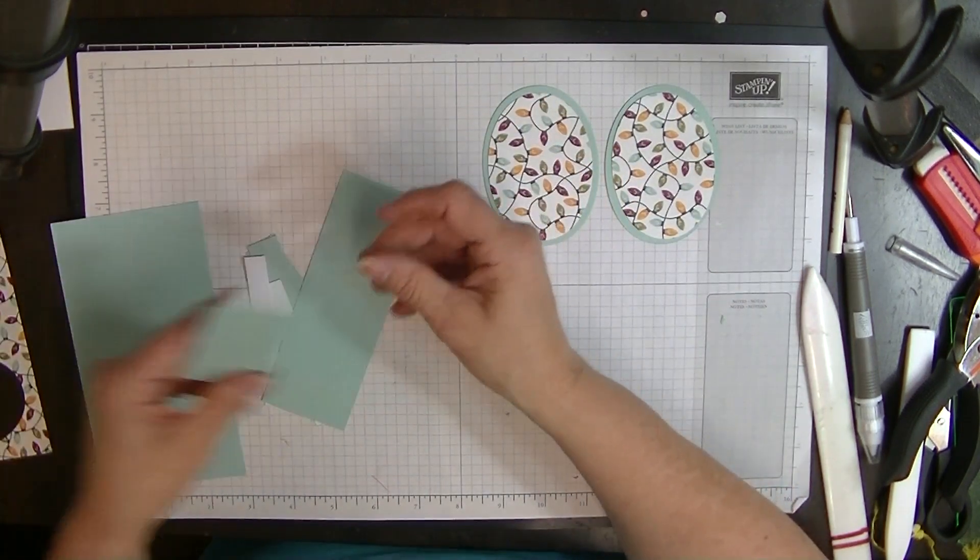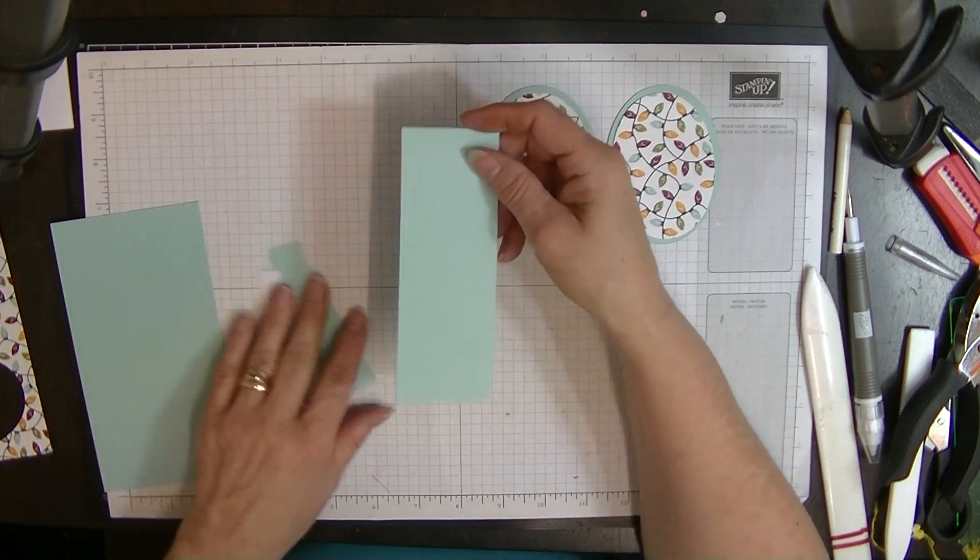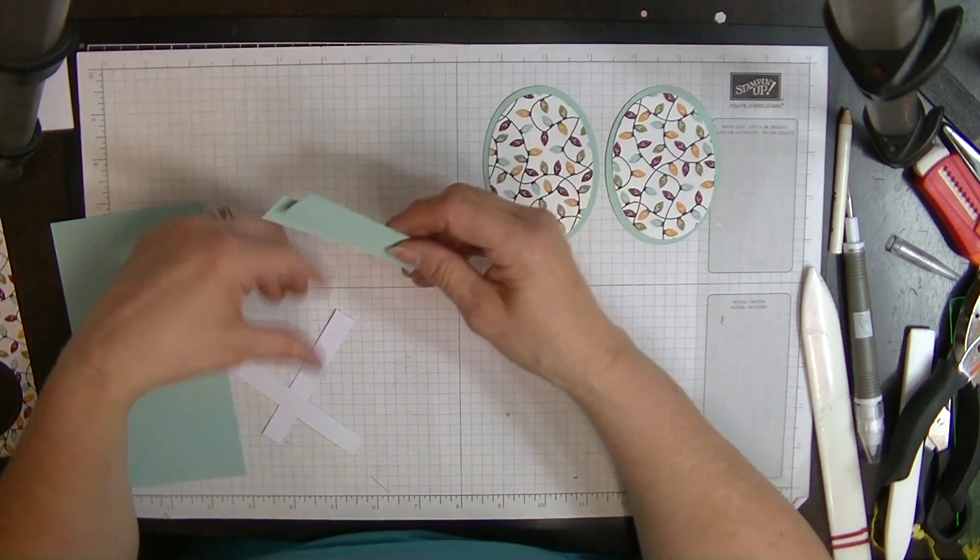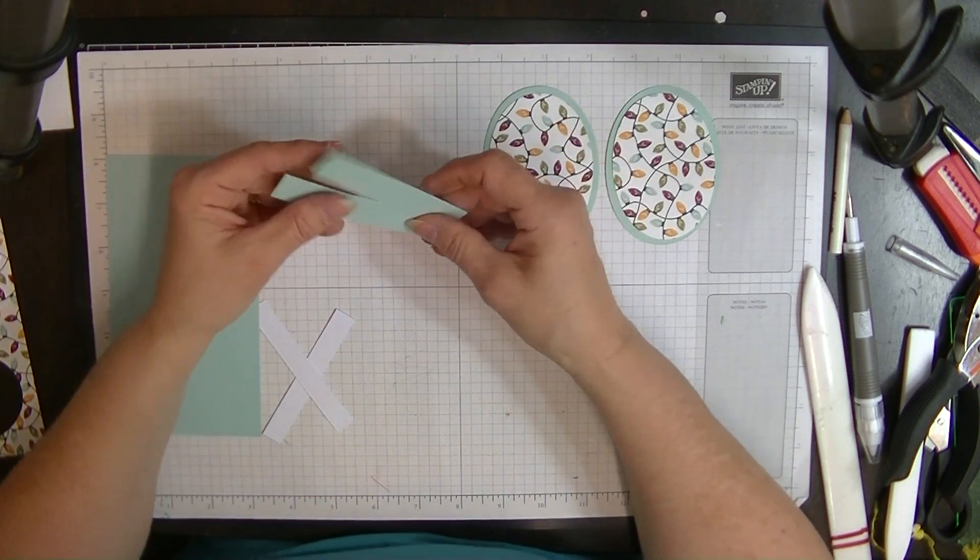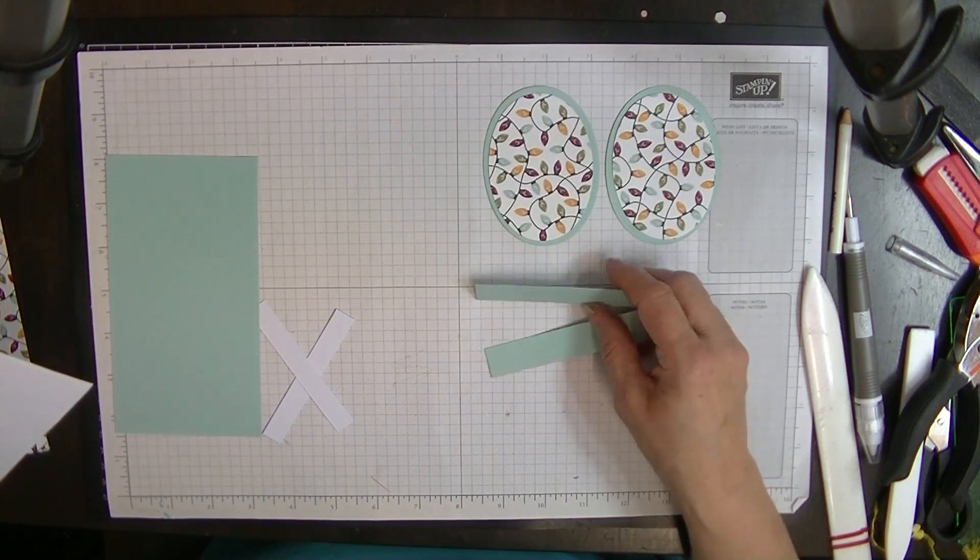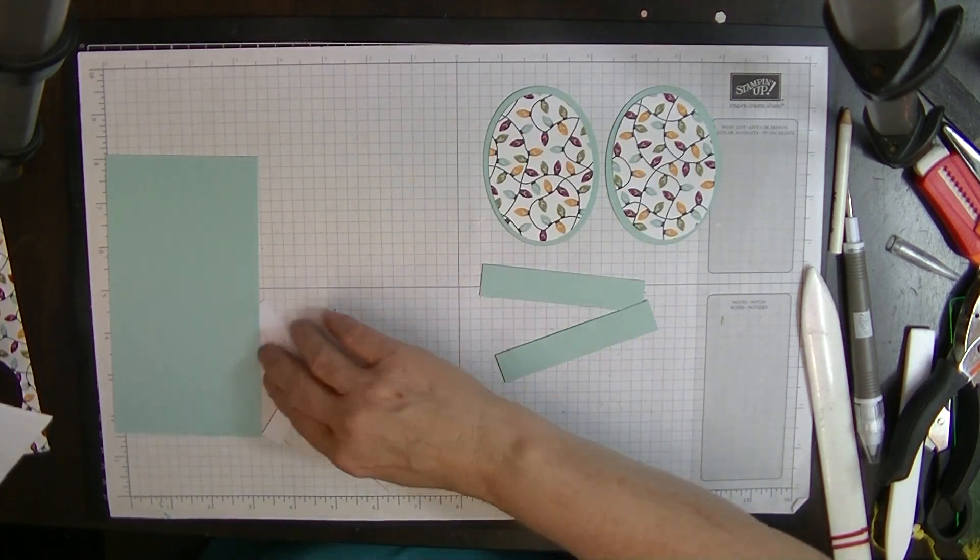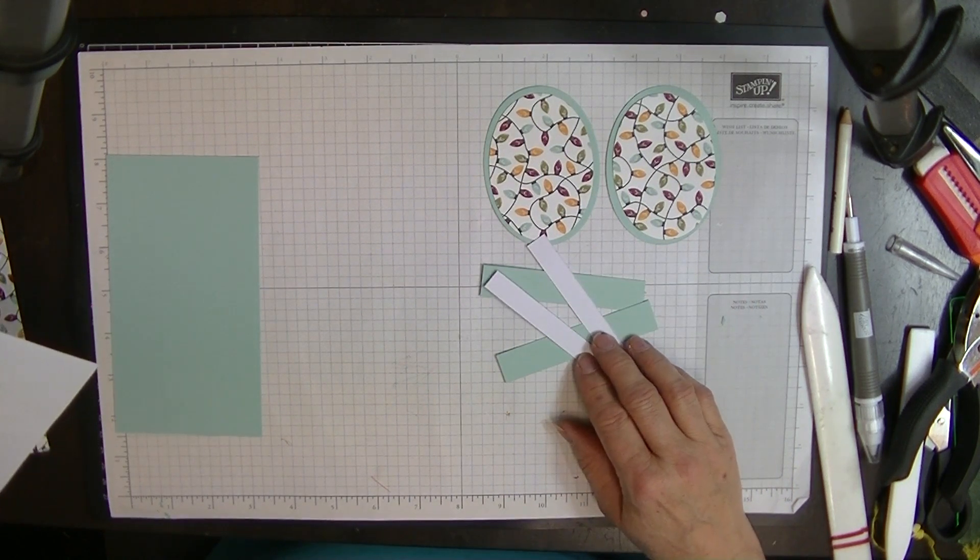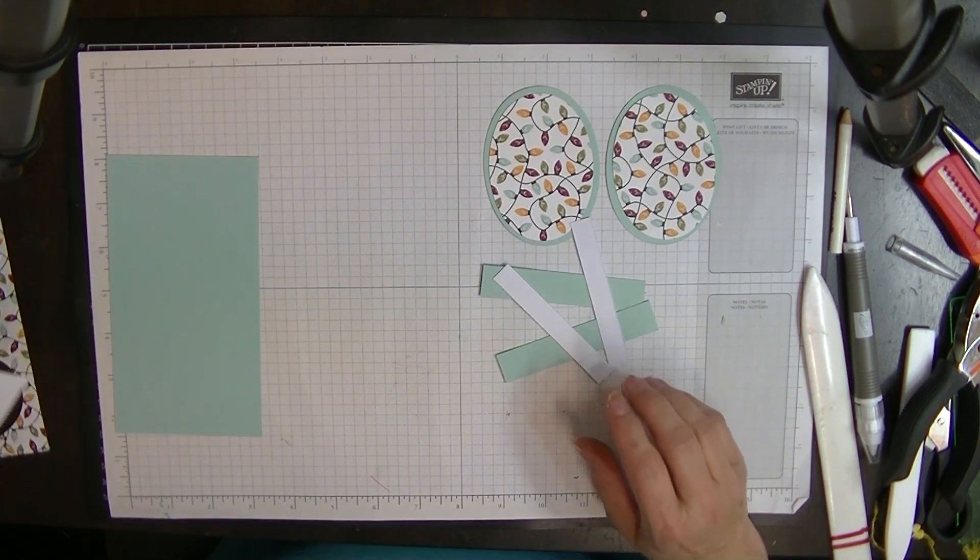One piece that measures five and five eighths by three and seven eighths in some card stock and the same size, five and five eighths by three and seven eighths in some designer series paper. And we're going to cut them out using the largest layering circle and the next size down so they can layer them on top of each other like so.